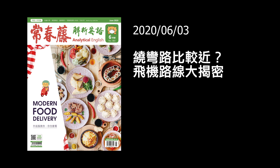Hi everybody, welcome again to Ivy English. I'm Bruce. I'm Angela. And I'm Wesley. Yesterday we took a look at two short articles with you. Today we have one normally long one called 'The shortest distance between two points is not necessarily a straight line.' The Chinese title is: 繞彎路比較近嗎?飛機路線大揭密. We'll be explaining that in detail. Please listen as I read through the entire article first, and then we will take turns reading every other sentence in English with Wesley doing the translation and explanation.